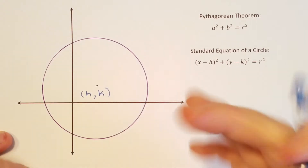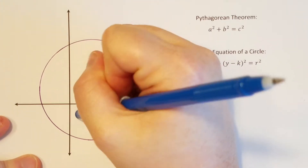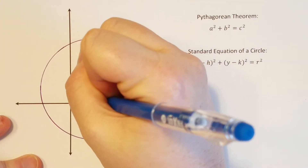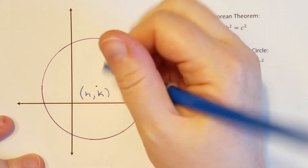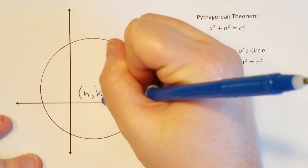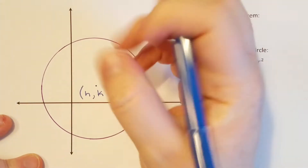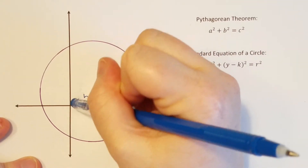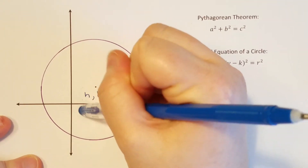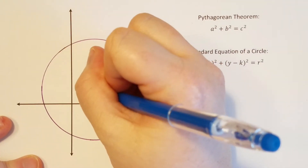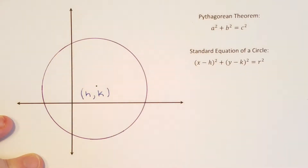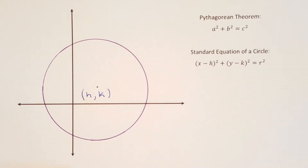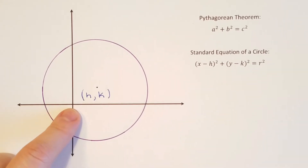Why am I using h,k? Because those are typically the letters that we use to represent the x and y coordinates of a circle's center. I'm sure there's a reason for it, but it's not really that important right now. So I'm going to label the center of this circle h,k.